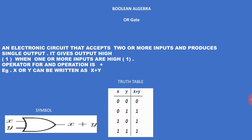OR gate — an electronic circuit that accepts two or more inputs and produces a single output. It gives output high or one when one or more inputs are high or one. The operator for OR operation is plus. For example, X OR Y can be written as X plus Y.